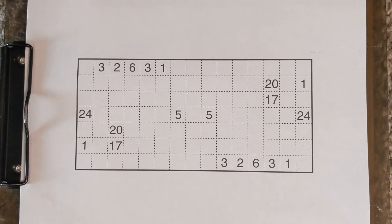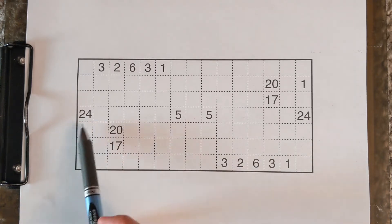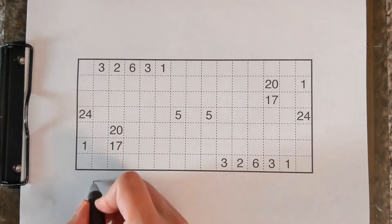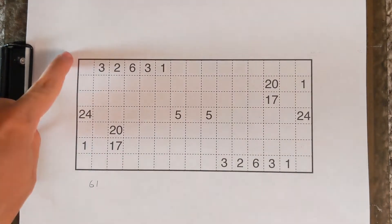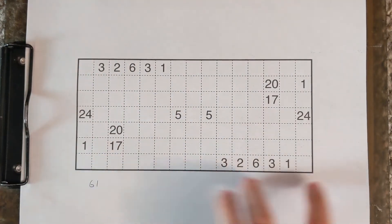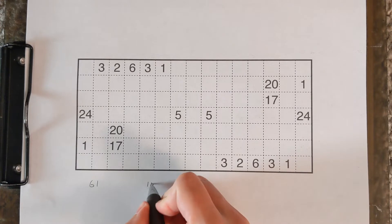To get started, a thing that is common in some fillomino is where the total count of cells will matter a lot. When we see a 24, a 20, and a 17, those together account for 61 cells in a puzzle that is 7 by 15 or 105 cells.